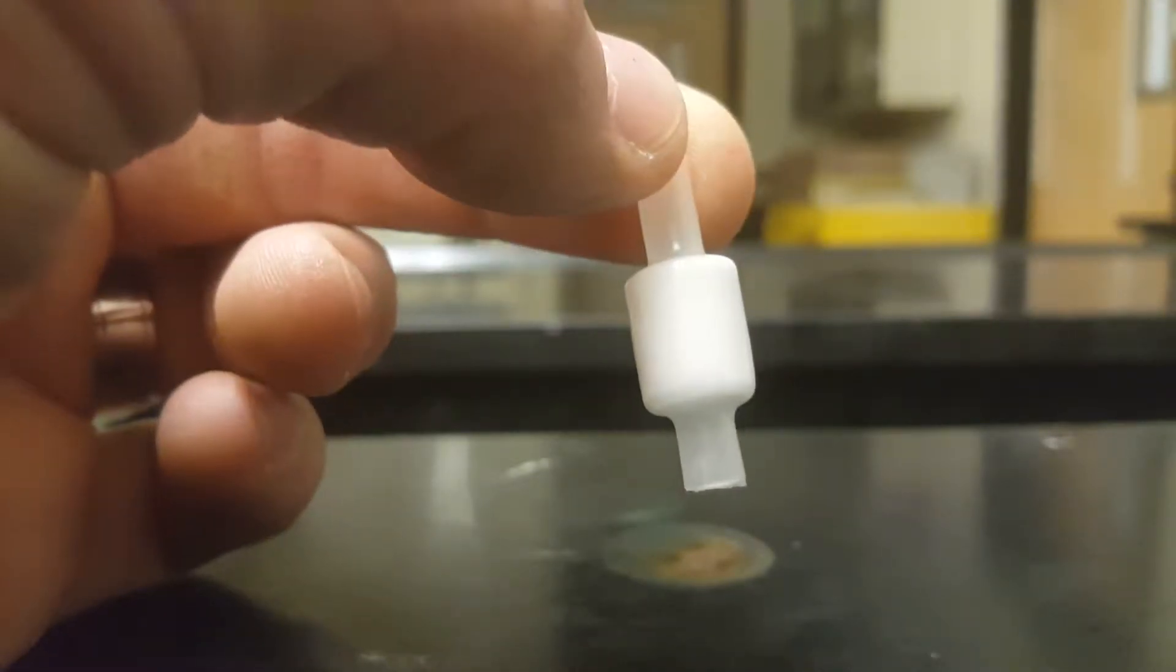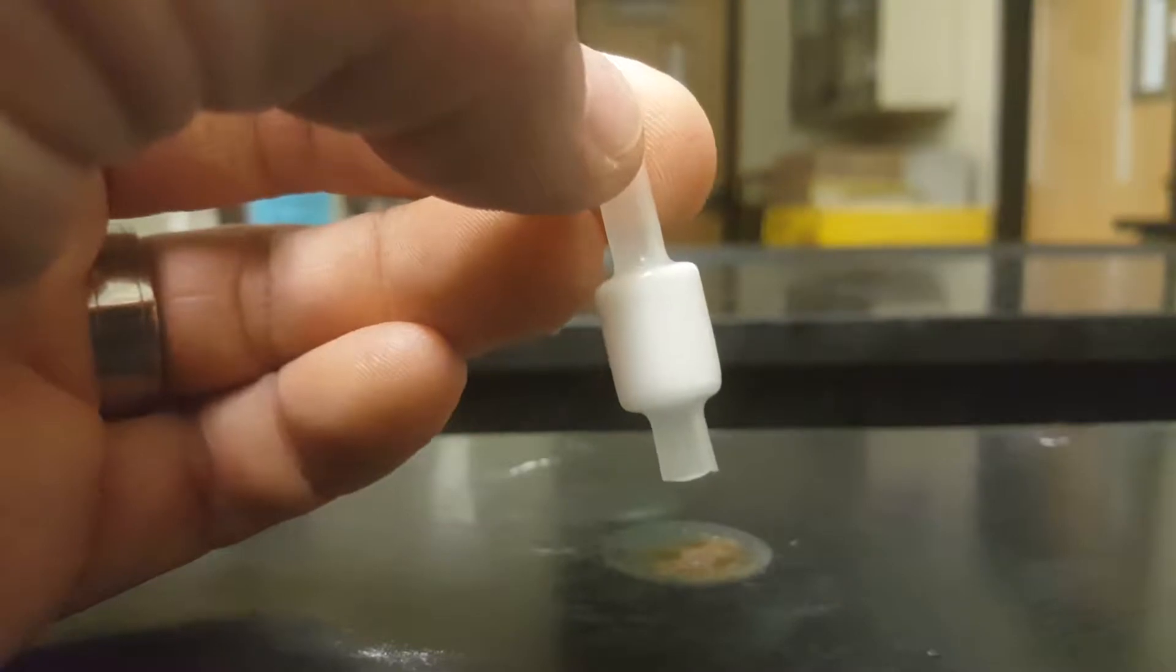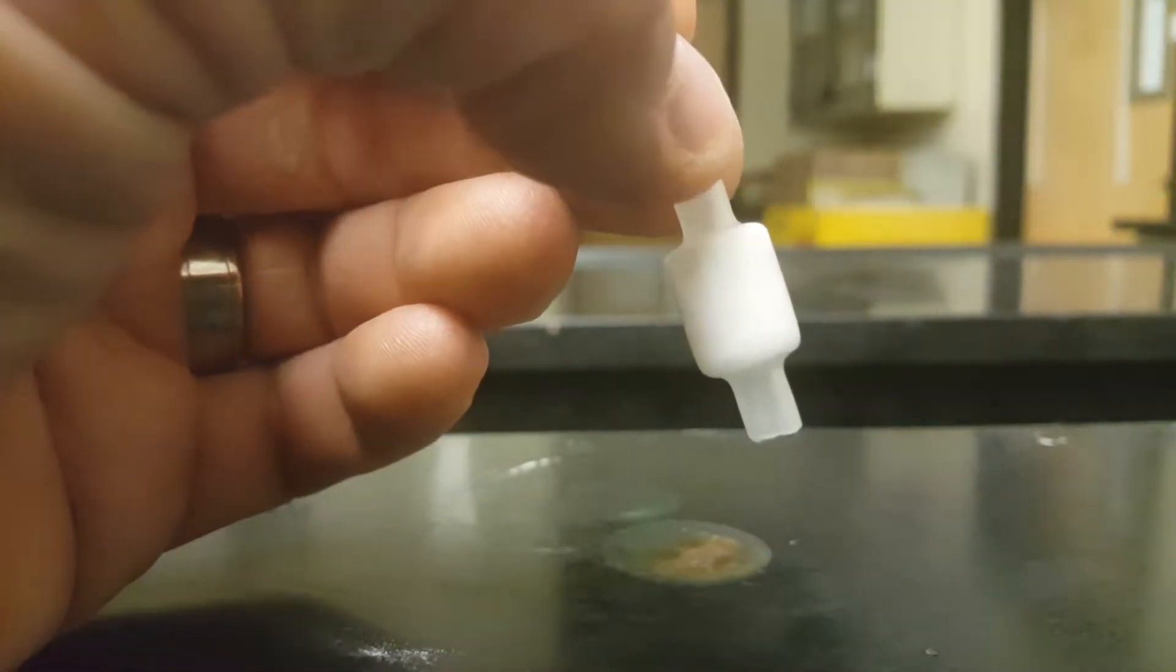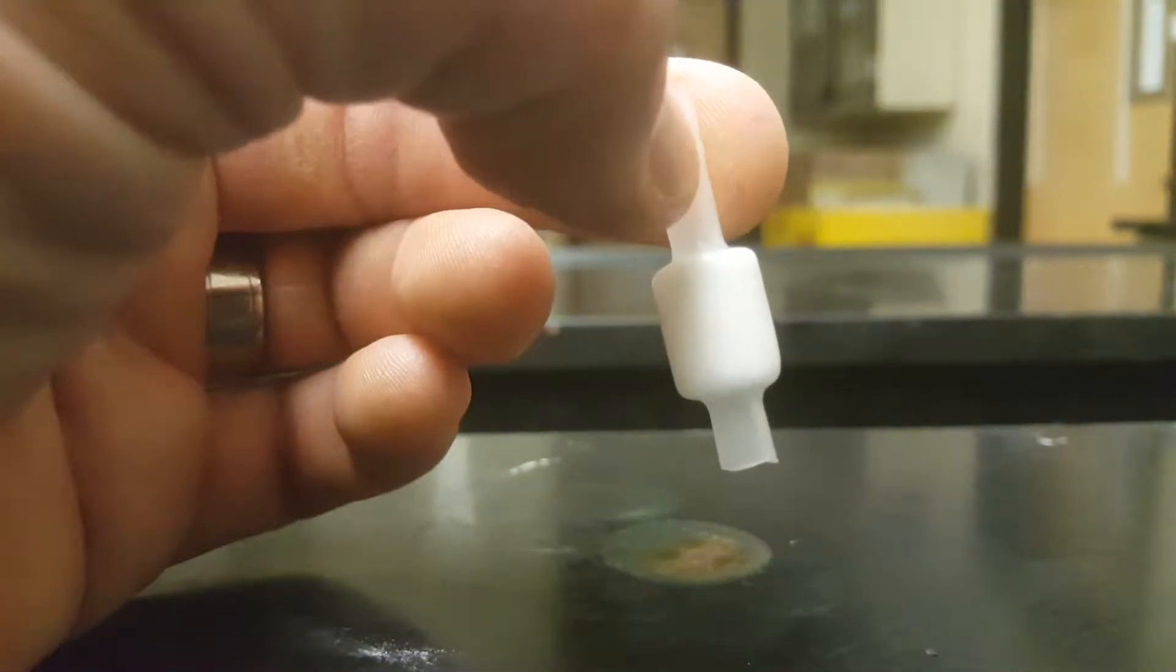Welcome to the introduction for reverse phase high-pressure liquid chromatography. This is your cartridge for your chromatography today. It's packed with tiny little silica beads. They're really silicon dioxide.